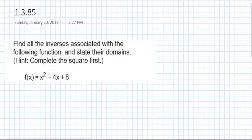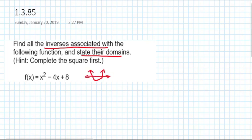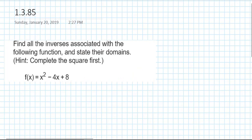Let's look back at our problem. We were asked to find all the inverses associated with the following function and state their domains. They're giving us a function which is a parabola. Just by the nature of being a parabola, we know it's u-shaped, it's going to fail the horizontal line test, it's not one-to-one. So we will have to restrict the domain. We have a hint: complete the square first.